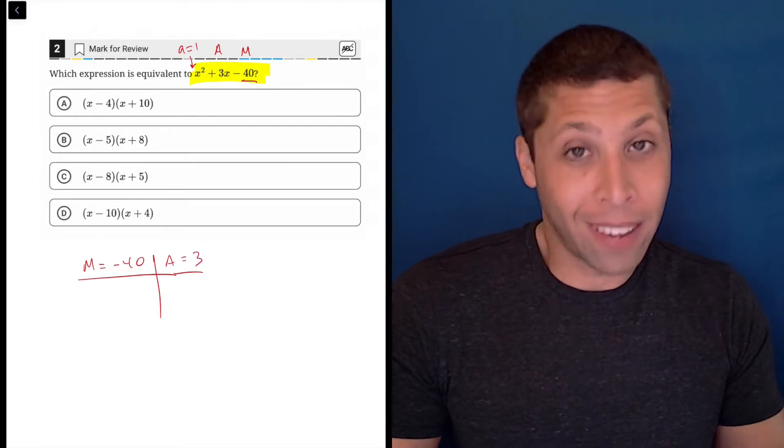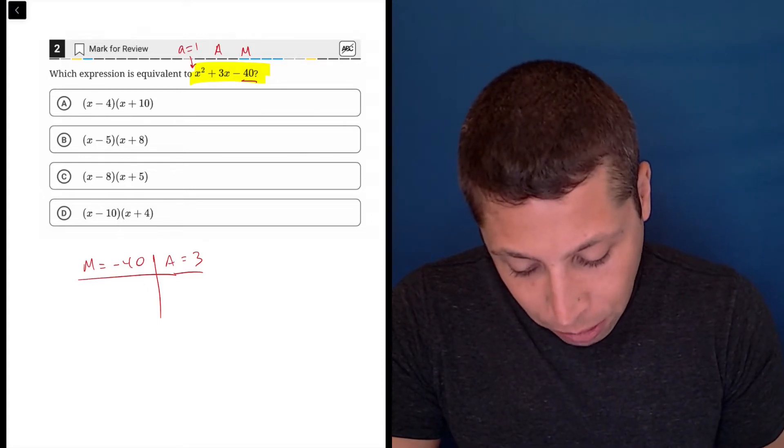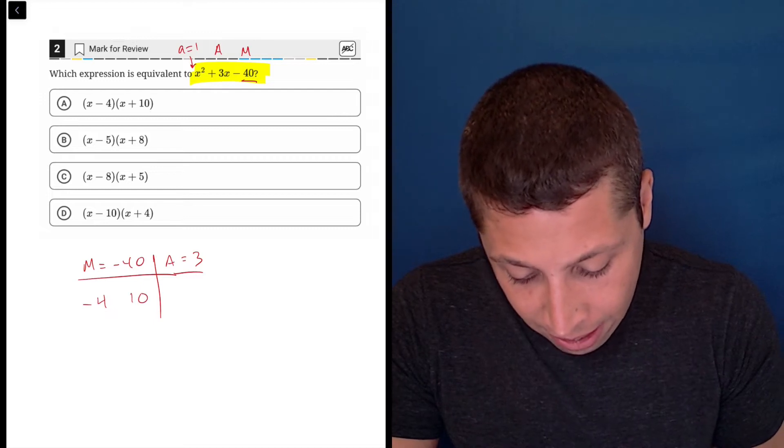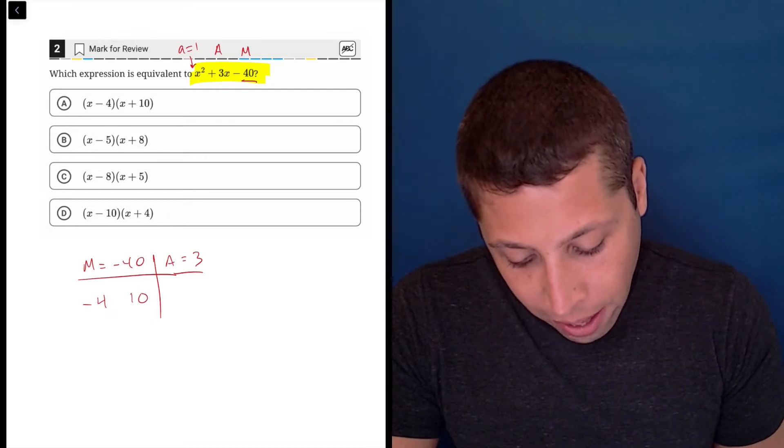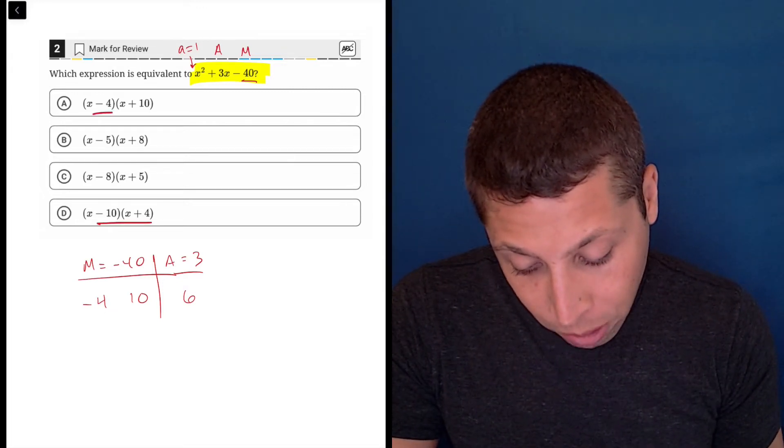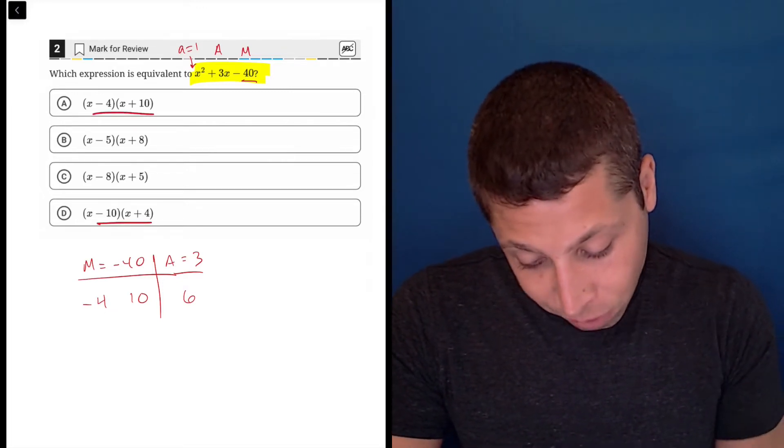I don't know if that's useful or not, but we can just try some things. So we could do negative four and 10. Now if we add those together, that would be six. So that doesn't work. But notice those two options are kind of there in both choices A and D, but we got to try something else.